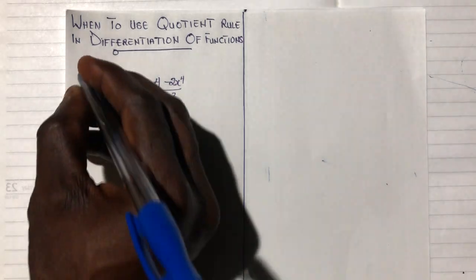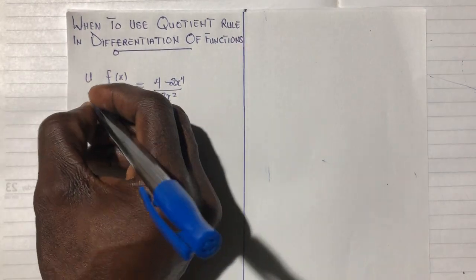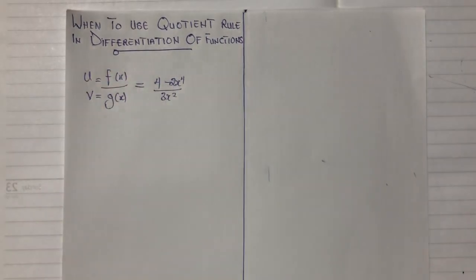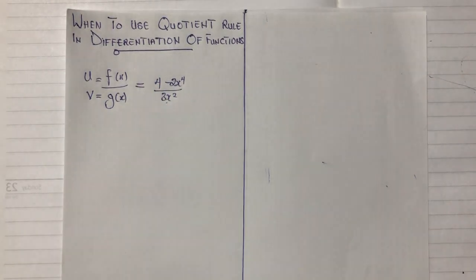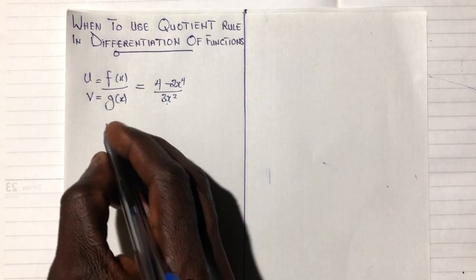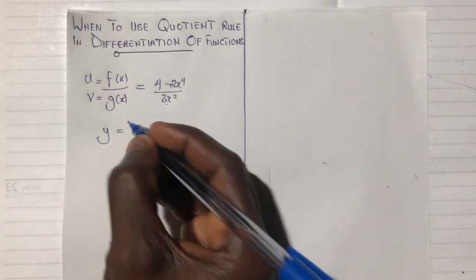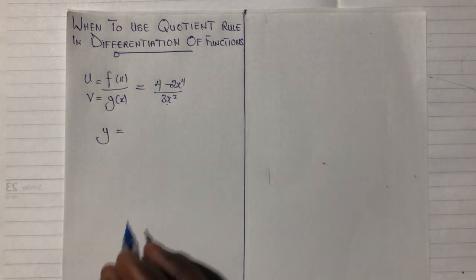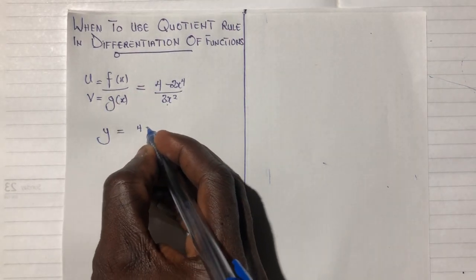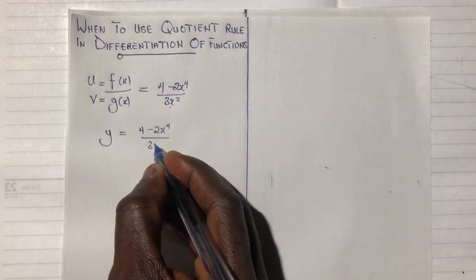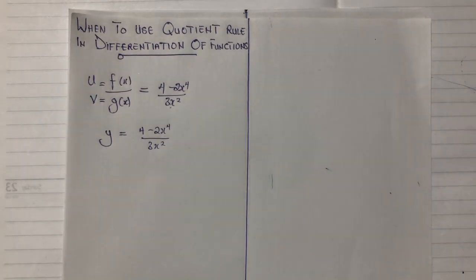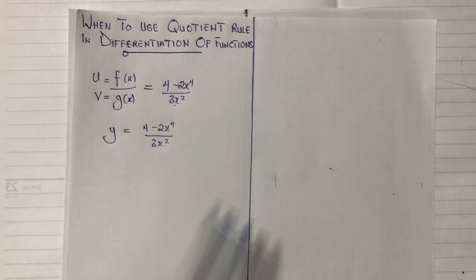We are given a function y equal to (4 minus 2x) raised to the power 4, all over 3x squared. We are told to find the derivative of this.